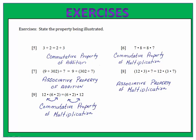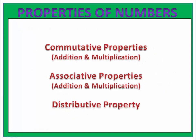Exercise nine can be a little tricky if you don't look closely. Notice that the only thing that changed is that the six times two and the twelve switched places. That is an example of the commutative property of multiplication — we simply changed the order of the numbers. This is everything you need to know to get started working with the commutative, associative, and distributive properties.